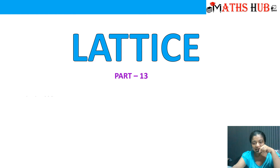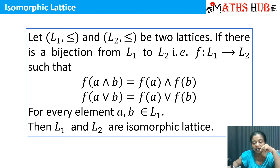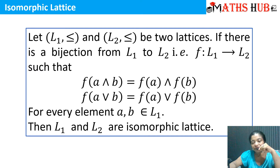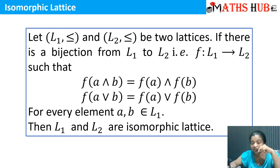Hello students and welcome to my channel MathsUp. Today in this video I will talk about isomorphic lattices. Let L1 and L2 be two lattices with the relation less than or equal to. If there is a bijection F from L1 to L2 such that F(A meet B) = F(A) meet F(B) and F(A join B) = F(A) join F(B) for every element A and B belonging to L1, then we say L1 and L2 are isomorphic lattices. In a nutshell, two lattices are isomorphic when their structures are the same or they are mirror images of each other.